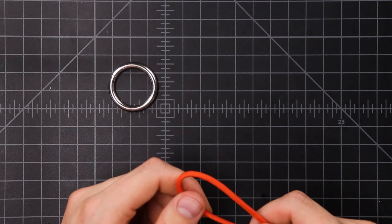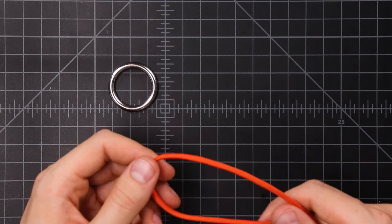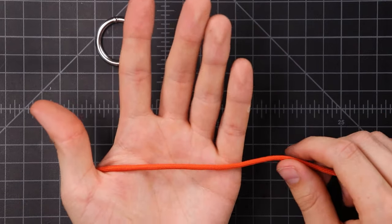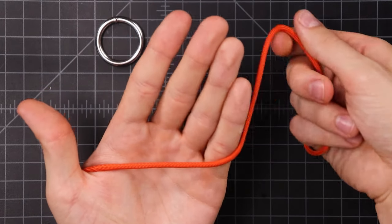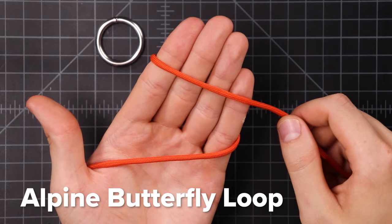Next up is the Alpine Butterfly Loop. This knot is often used for climbing, but it's also fairly decorative. Start by wrapping it around your thumb, then bring it around your hand, and across the front of your fingers.